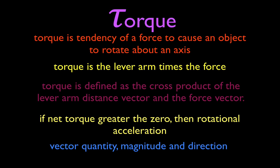But what is torque? In the textbooks, you often hear people talk about torque in different ways. One common way is to say torque is a tendency of a force to cause an object to rotate about an axis. People often say torque is a turning force — it causes something to rotate. Another common description is that torque is the lever arm times the force, or sometimes just the distance times the force. The torque is dependent upon the magnitude of the force, and also upon the distance away from the pivot point that the force is applied.